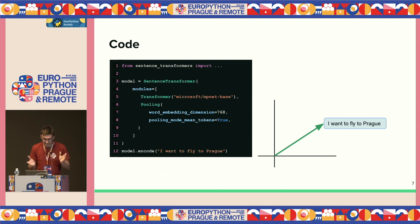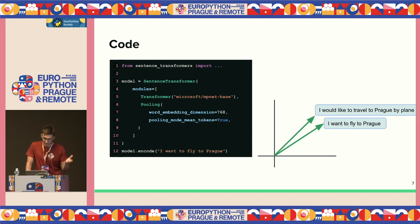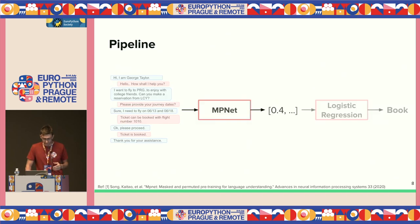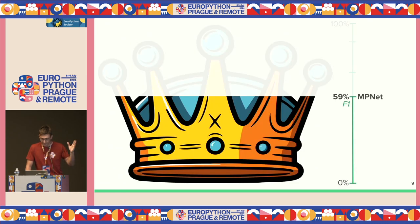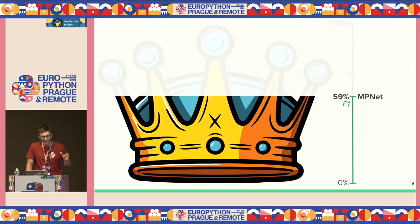We pass all conversations through MPNet, extract embeddings, train logistic regression, run evaluation, and we got an F1 score of 59%. On one hand, not bad. On the other hand, MPNet has 110 million parameters, and this is really not a complicated problem. Something is not working. The problem is that MPNet and transformer encoders generally are trained to represent token embeddings, not the final sentence embeddings.